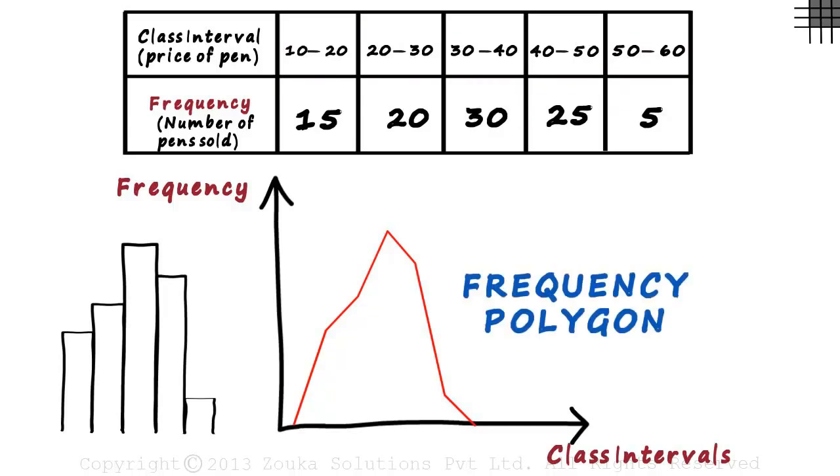This is called the frequency polygon. Frequency, as it represents the frequency of each class interval, and polygon, as it has many sides.